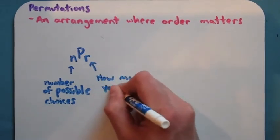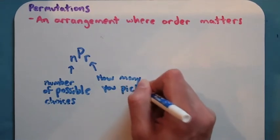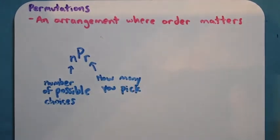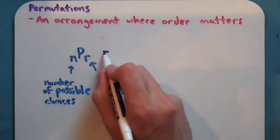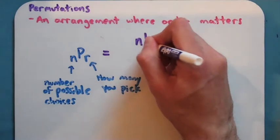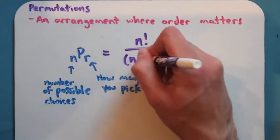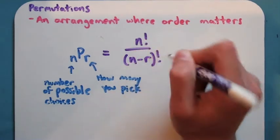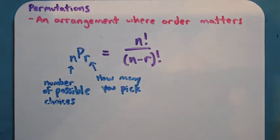So it's how many total and how many you actually pick for the problem here. And there is a formula for NPR right here for doing permutations. It's going to be N factorial over N minus R factorial. And I'm going to show you how this formula works actually using the same examples we did in our last video.